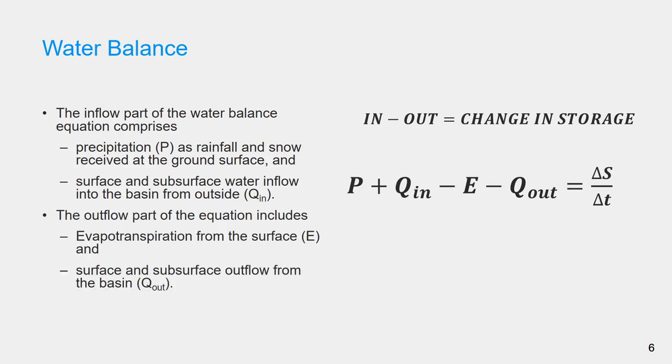In general, the inflow part of the water balance equation comprises precipitation as rainfall and snow actually received at the ground surface, and surface and subsurface water inflow into the basin from outside.